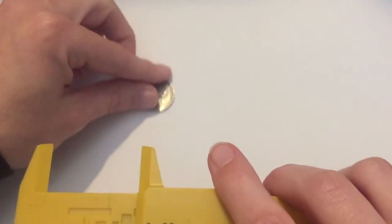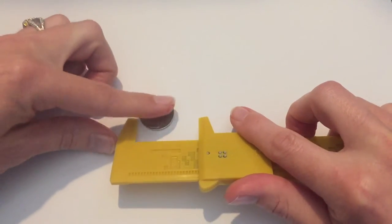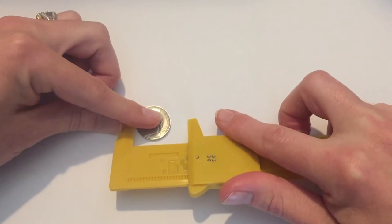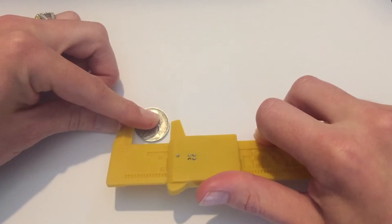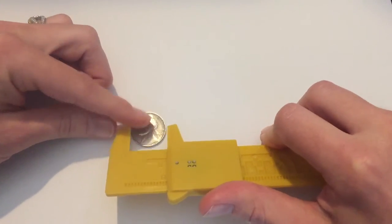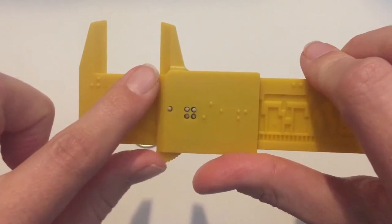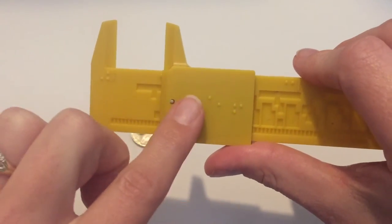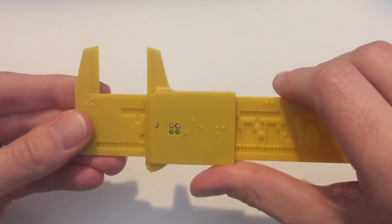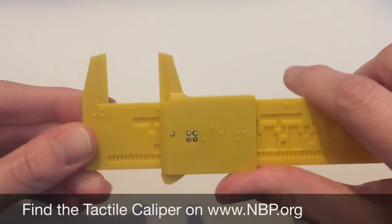Let me just show you how it works here with this nickel. I'm going to line up the left side, and it's already open, so I'm going to just push it back over for the sliding piece to get a good reading of the diameter of this nickel. I'm going to read over—I can tell that I'm not to the 1 inch yet, so I'm going to read 13/16th of an inch, and that's all there is to it.